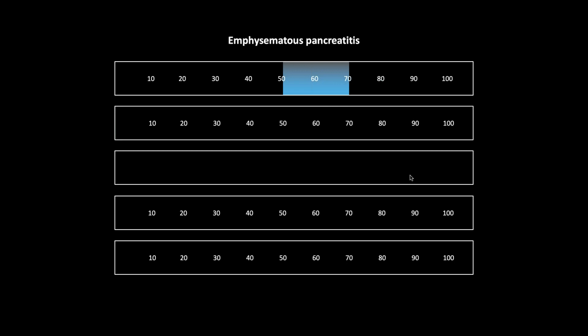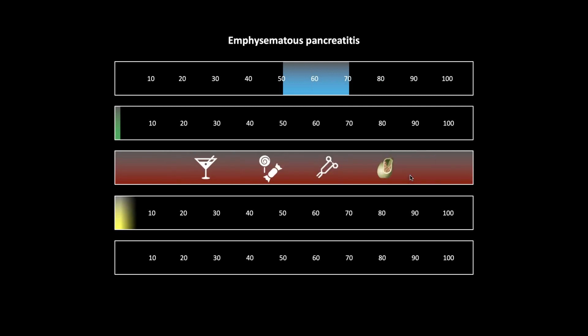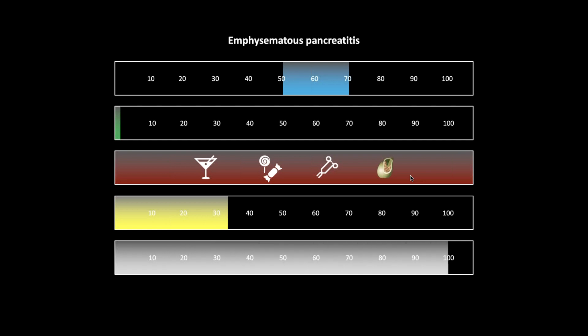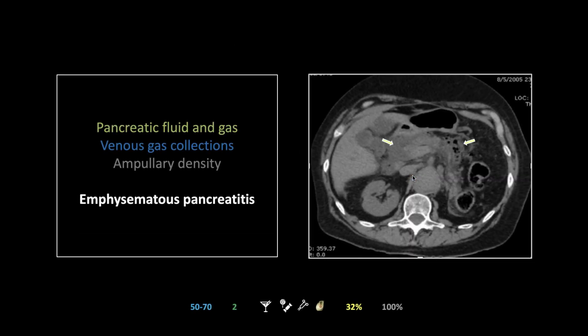Our next case is emphysematous pancreatitis, more common in men aged 50 to 70. The incidence is low — about two to three per hundred thousand. Risk factors are alcohol, diabetes, previous surgery, and gallstones. The mortality is a striking 33 percent. CT is considered essentially 100 percent sensitive; gas collections indicative of emphysematous pancreatitis are pretty easy to identify.